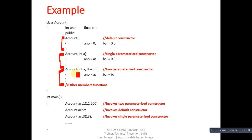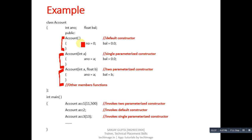The third constructor receives two arguments, 'a' and 'b': 'a' is initialized into account number and 'b' into balance — this is a two-parameterized constructor. So this class contains three constructors total, all with the same name but different number of arguments: constructor one has no arguments, constructor two has one argument, and constructor three has two arguments. After these constructor definitions you can define other functions like read, print, etc.